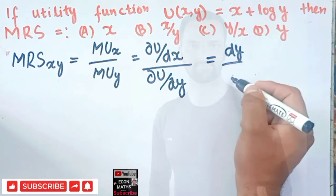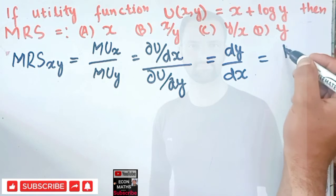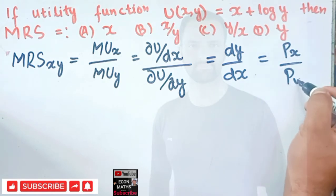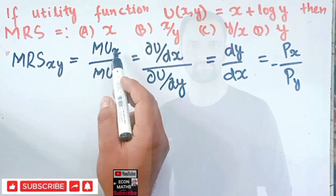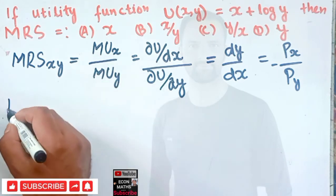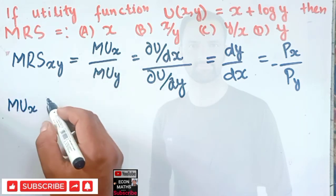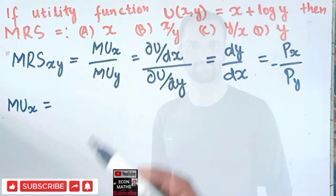This in turn is equal to dy upon dx, which should equal the price of x over the price of y. That is the formula for marginal rate of substitution. Now, what is our marginal utility of x? We differentiate the utility function partially with respect to x.